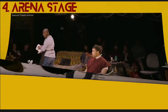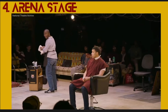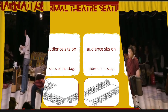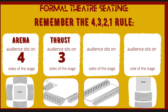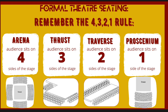Now here's a really cool way to remember the arrangement of the seating — it's a 4-3-2-1 rule. When the audience sits on four sides of the stage, that is arena. With thrust, the audience sits on three sides. With traverse, the audience sits on two sides. And with proscenium, the audience sits on one side. We go 4-3-2-1, or 1-2-3-4 — a really nifty way to remember the seating arrangement for the four main types of formal theater spaces covered at Form 2 level.